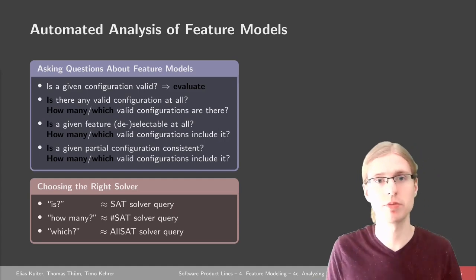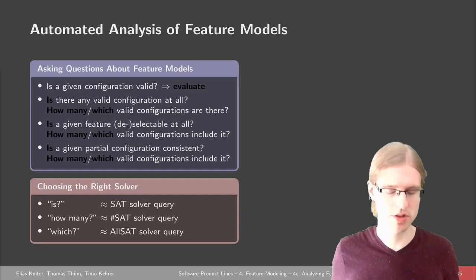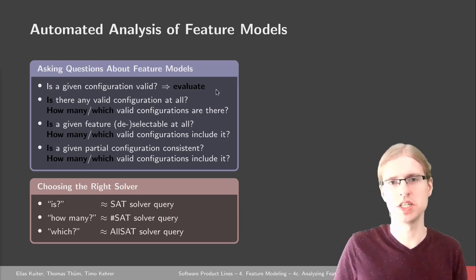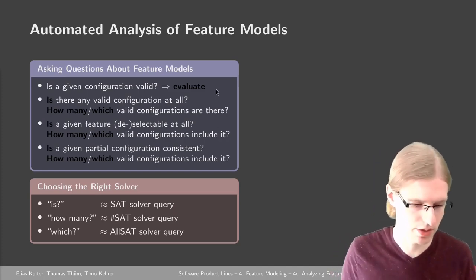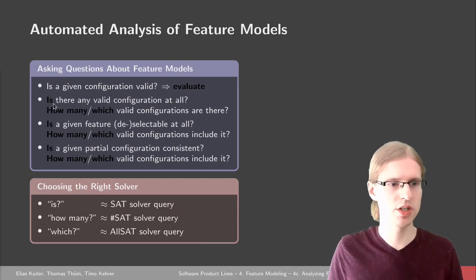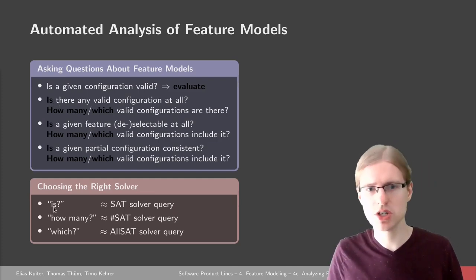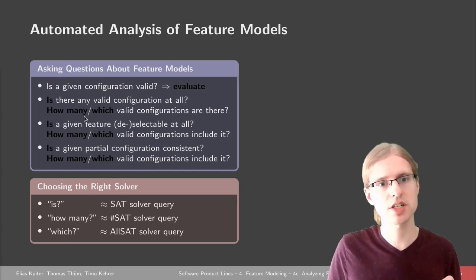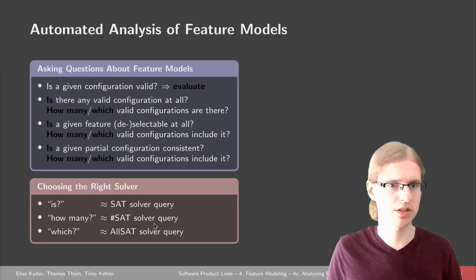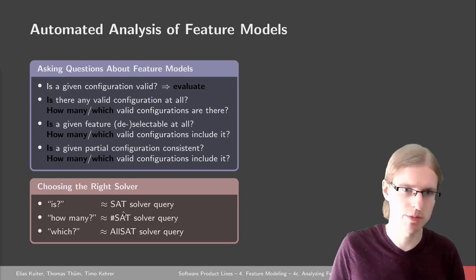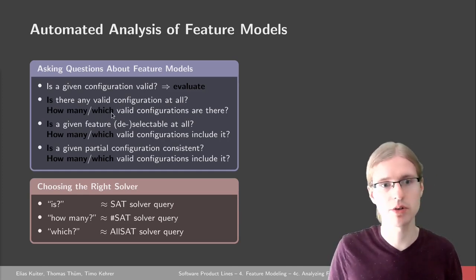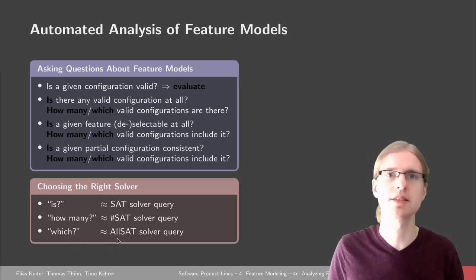Going back to the actual questions about the feature model, we can choose the right solver for each question. When we have a configuration and just want to find out if it's valid, we can just evaluate the formula — we've seen this before. When we want to know if there is any valid configuration at all, this sounds like a SAT solver query, since satisfiability solving answers a yes/no question. If we want to know how many valid configurations there are, this sounds like a counting problem, so we'd use a #SAT solver. And if we want to know all valid configurations, this is an enumeration problem — we'd ask an All-SAT solver.